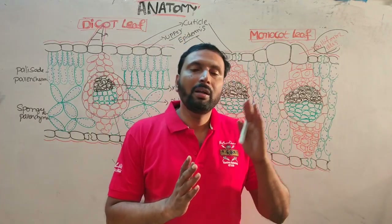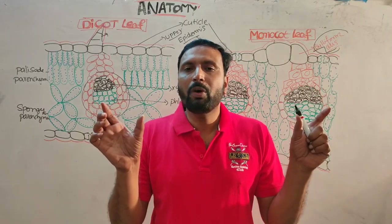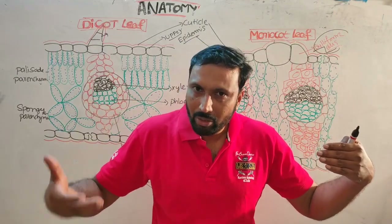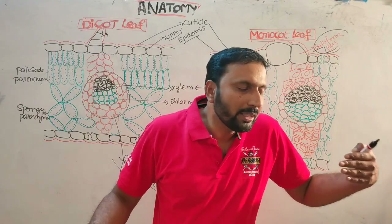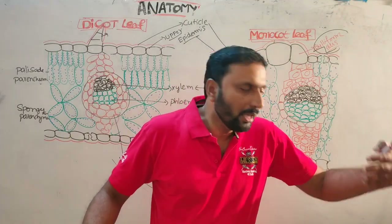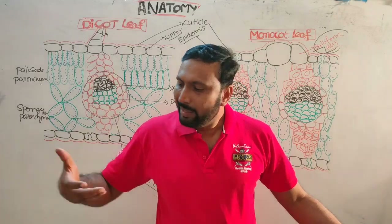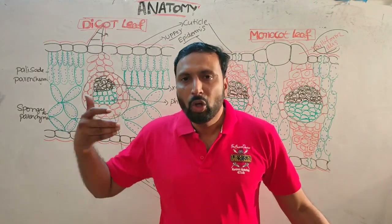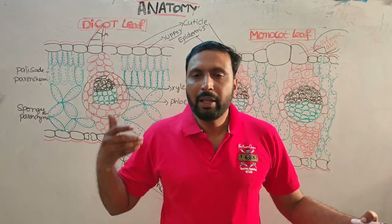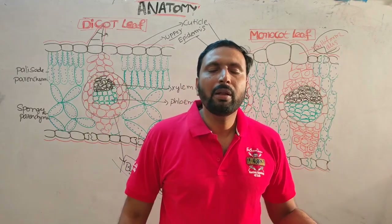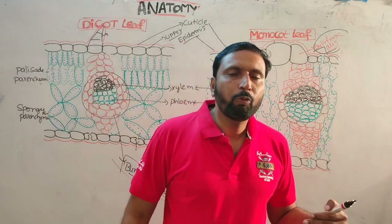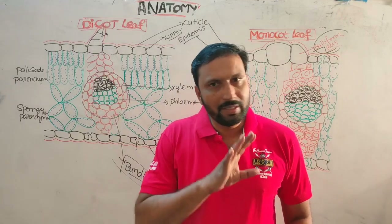For stems: dicot stem has trichomes; monocot stem does not. Hypodermis is collenchyma in dicot stem, sclerenchyma in monocot stem. Dicot stem has general cortex and endodermis; monocot stem has only ground tissue, no endodermis. Pericycle present in dicot, absent in monocot. Eustele in dicot stem, atactostele in monocot. Dicot is open conjoint collateral; monocot is closed conjoint collateral. Medulla and medullary rays present in dicot, absent in monocot. Phloem in dicot contains fibers and parenchyma; monocot phloem does not.